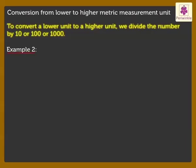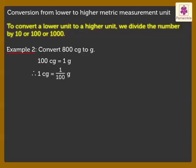Now, convert 800 centigrams to grams. We know that 100 centigrams is equal to 1 gram. Therefore, 1 centigram is equal to 1/100 grams. Therefore, 800 centigrams is equal to 800/100, which is equal to 8 grams. That is, we remove two zeros from the right of the lower unit.